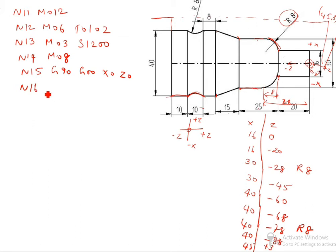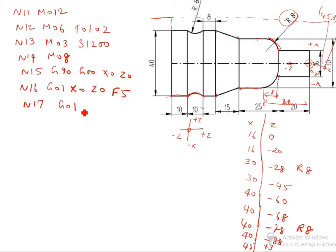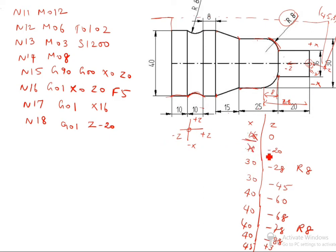N16: G01 X0 Z0 F5 — F5 is feed rate. G01 is linear interpolation; the tool moves in linear motion only. N17: G01 — X value is 16, so X16. Z is 0, so you can write Z0 also; if no value, you can remove it. N18: G01 Z minus 20. Why Z minus 20? Because 16 is already there, so don't write 16 again — just minus 20.